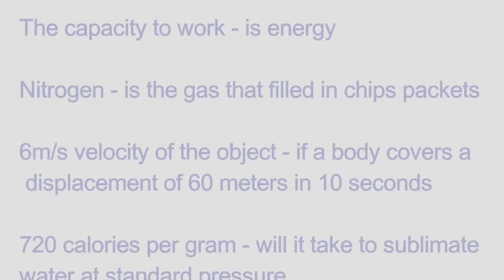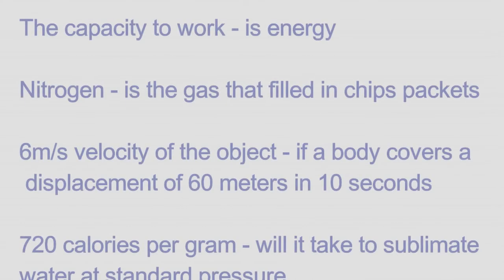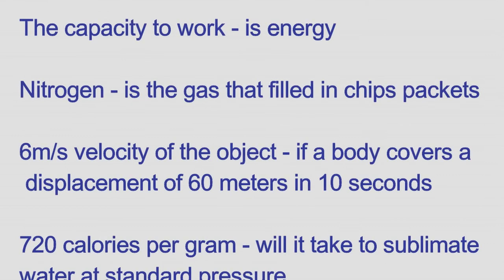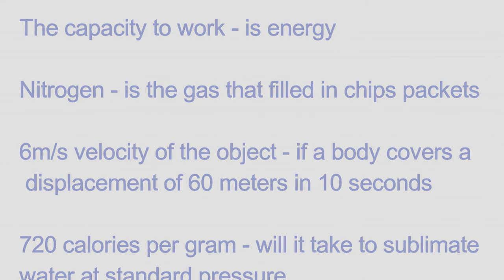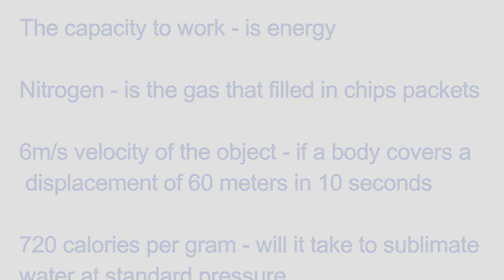Nitrogen is the gas that fills chip packets. Velocity of an object: if a body covers a displacement of 60 meters in 10 seconds, the velocity is 6 meters per second. 720 calories per gram is the energy needed to vaporize water.